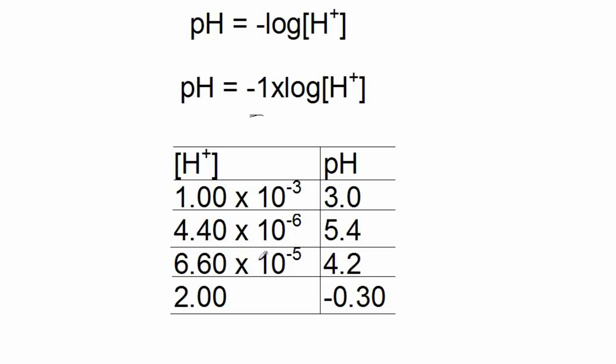And hydrogen ion concentrations with exponents that are positive result in negative pH values.